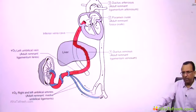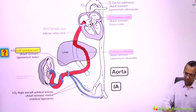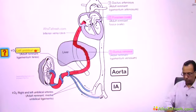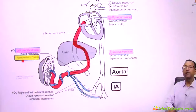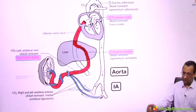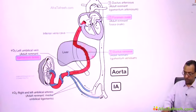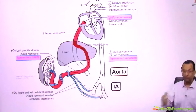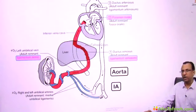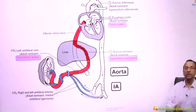After delivery, the left umbilical vein is obliterated and forms the ligamentum teres — the adult remnant of the left umbilical vein. Similarly, the ductus venosus closes after birth and becomes the ligamentum venosum. The foramen ovale closes and becomes the fossa ovalis.